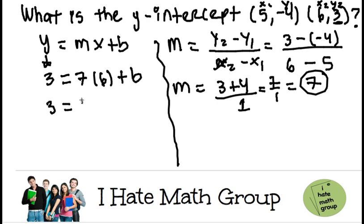So then 3 equals 7 times 6 is equals to 42 plus b. Remember, b is defined as the y-intercept. So once I find b, I got my answer.